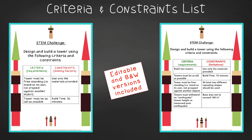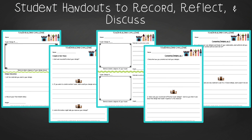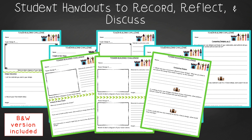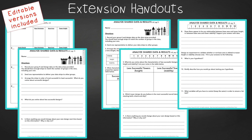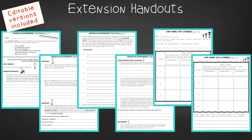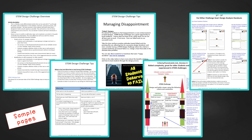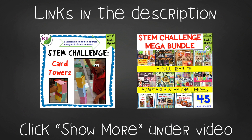You'll find two editable criteria and constraints lists so you can tailor the challenge to your students. For student design analysis handouts, there are two versions: a five-page expanded version with room for response for younger students, and a three-page condensed paper-saver version. You'll get one set for a height challenge and a second for height and stability. You'll also find a set of group discussion questions. In the extension handouts, you'll find class-wide data analysis, graphing templates, and a design-your-own-experiment activity, as well as additional math extension, design report, and process flow templates. You'll also receive a detailed teacher guide and everything that comes with the holiday version, Cards in the Clouds. This resource is available individually and is part of the discounted Mega STEM Challenge Bundle. Links can be found in the description below the video.